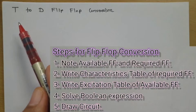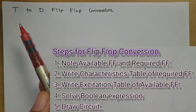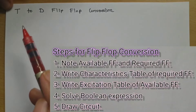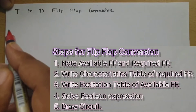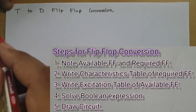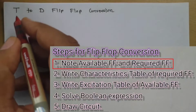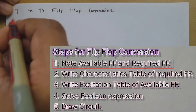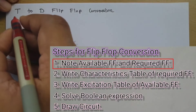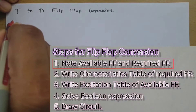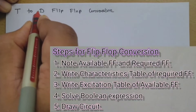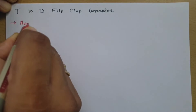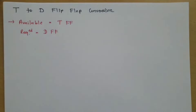Let us complete this example step by step. The first step is to note down the available flip-flop and the required flip-flop. Here the available flip-flop is the T flip-flop and the required flip-flop is the D flip-flop.